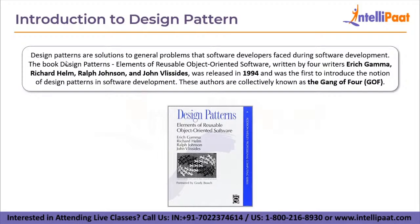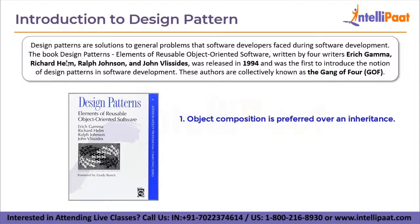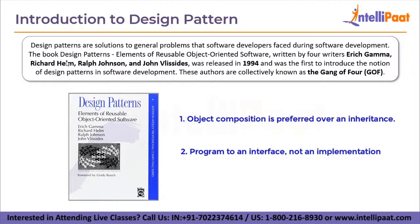Even though the GoF design patterns book was released over 20 years ago, it is still a popular book for software developers. These writers claim that design patterns are essentially based on two object-oriented design concepts: first, object composition is preferred over inheritance; and second, program to an interface, not an implementation. Although the GoF authored the book in C++, it is still quite relevant to Java programming, as both are object-oriented languages. The GoF design patterns are divided into three categories.